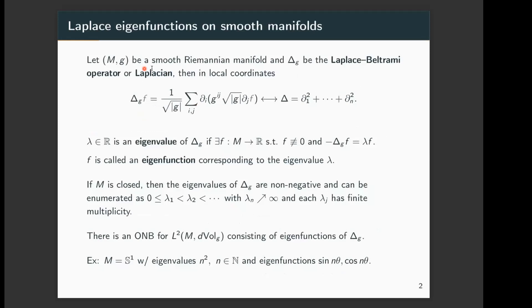Next, let me define what Laplace eigenfunctions are. If we take a smooth Riemannian manifold, we consider the Laplace-Beltrami operator, which in local coordinates is given in this form — this is the analog of the usual Laplacian in Euclidean space. We say that λ is an eigenvalue of the Laplacian if we can find a non-trivial function satisfying this eigenvalue equation. Such an f is called a λ-eigenfunction of the Laplacian. It is a well-known fact that if M is closed, the eigenvalues form a discrete set with infinity as the only accumulation point, and it is possible to find an orthonormal basis for L² consisting of these eigenfunctions.